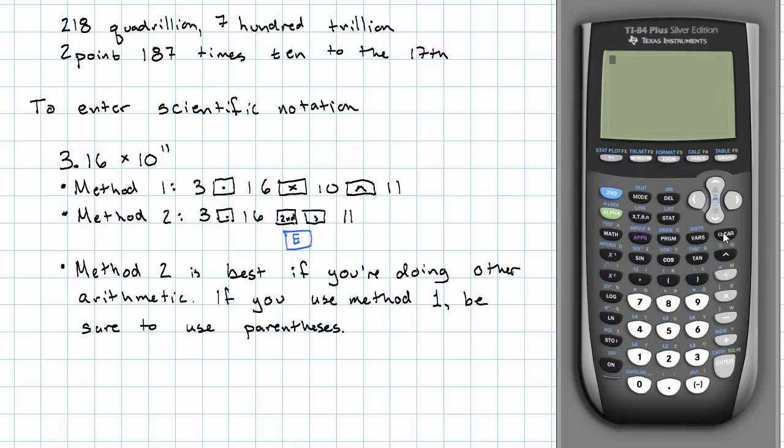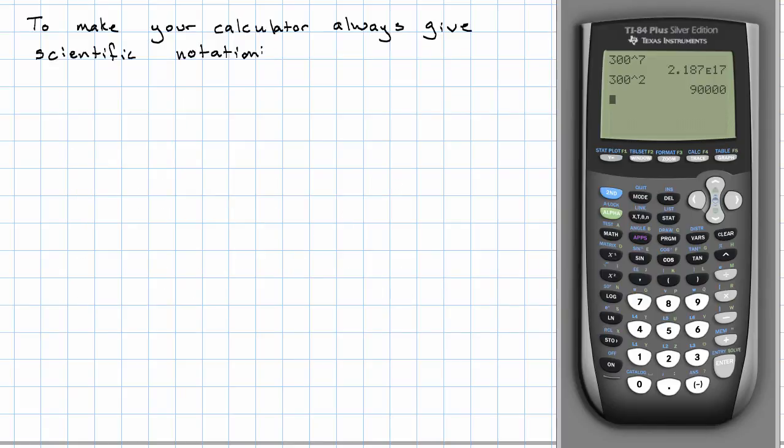So sometimes your calculator gives the answer in scientific notation, like it did for 300 to the seventh power. Sometimes, though, it gives the answer in decimal notation, like it does for 300 to the second power. What if you want to make it always give the answer in scientific notation, no matter what? You might want that, for example, if you're in a situation where copying all those extra zeros is problematic.